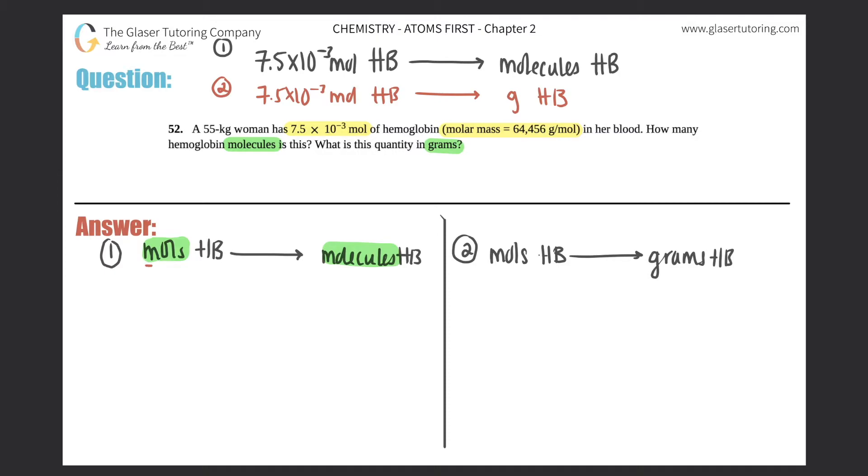What's the information that we know between molecules and moles or moles and molecules? Star this, box this off, I don't care what you do, but this is super important. One mole of anything equals Avogadro's number in molecules, 6.022 times 10 to the 23rd molecules of that same thing.